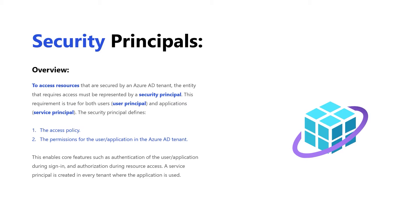To reiterate: we have an application and we want to access the resources that exist in it. The security principle defines that access policy — it defines how we can access the application and those resources. Additionally, it defines the permissions for the user in the Azure AD tenant: what are the things it can do? This is where we can enable the idea of authenticating a user and then authorizing the resources inside of our application, bringing home the bigger point that we want to make sure our resources are secure.